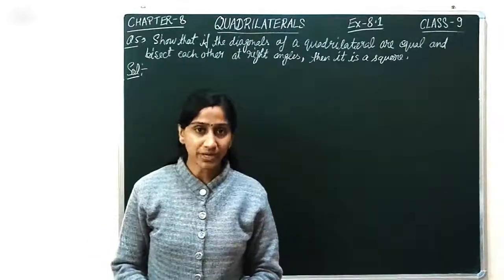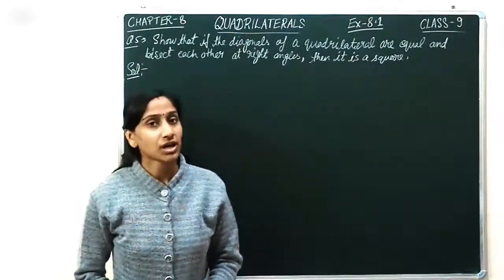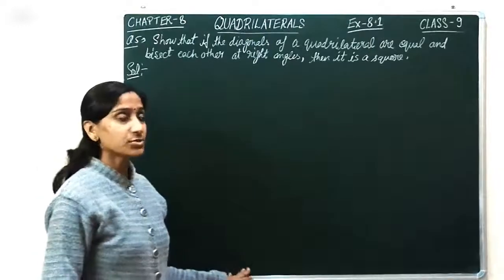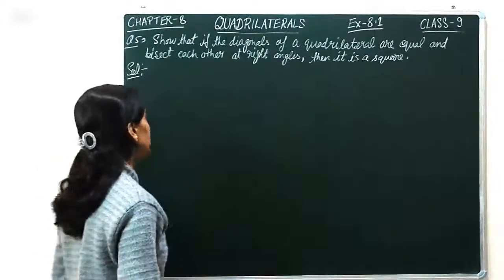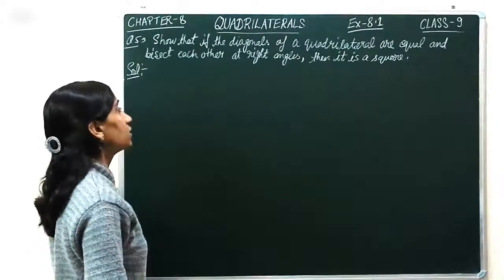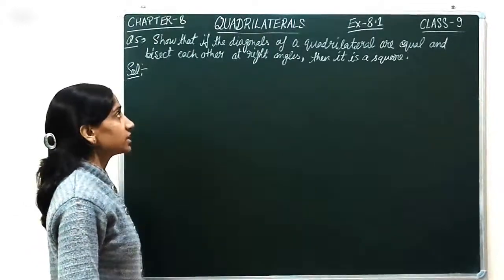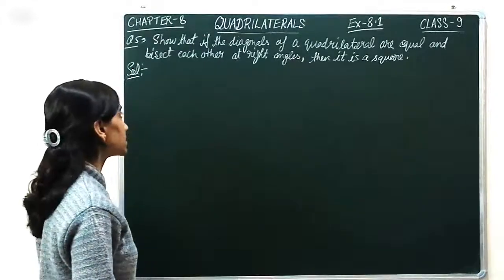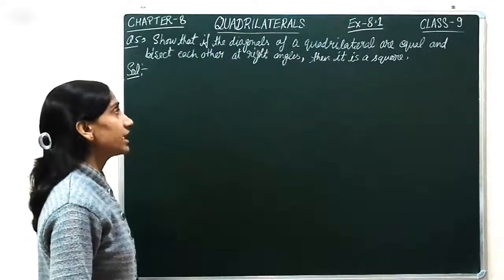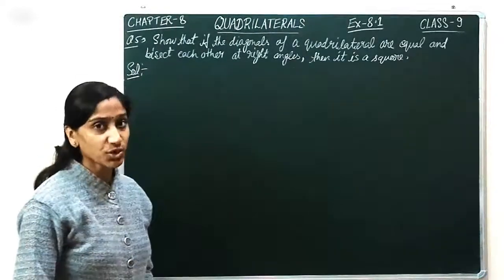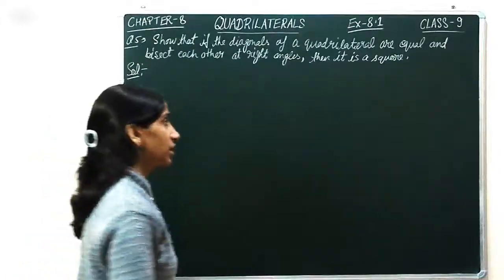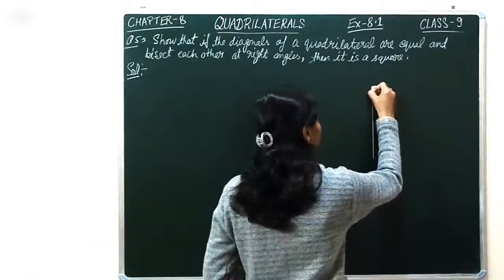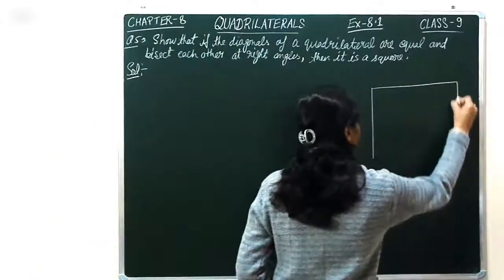Hello students! Welcome to Maths Knowledge Promotion. Today we are going to discuss question number 8 of quadrilaterals: Show that if the diagonals of a quadrilateral are equal and bisect each other at right angles, then it is a square. We are going to prove that a quadrilateral is given in this way.